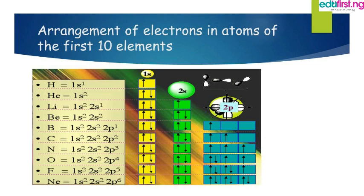Now let's see the electronic configuration of the first ten elements. Hydrogen (atomic number 1): 1s1. Helium: 1s2. Lithium: 1s2, 2s1. Beryllium: 1s2, 2s2. Boron (atomic number 5): 1s2, 2s2, 2p1. Carbon: 1s2, 2s2, 2p2. Nitrogen: 1s2, 2s2, 2p3. Oxygen: 1s2, 2s2, 2p4.